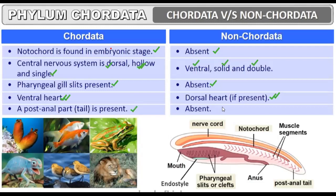A tail is present in chordates and absent in non-chordates. In human beings, a tail is present in the embryonic stage at the posterior side of the body — the post-anal region. All large macro animals we see are approximately all chordates. Non-chordates include all sponges, all hemichordates, tongue worms — these have no notochord and no properly developed heart.